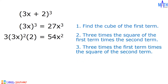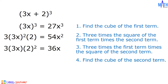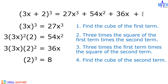Step number 3: 3 times the first term times the square of the second term. We have 3 times 3x times square of 2. Square of 2 equals 4. 9x times 4 equals 36x. Last step: cube the second term. The second term is 2. Cube of 2, or 2 times 2 times 2, equals positive 8. And the cube of 3x plus 2 equals 27x cubed plus 54x squared plus 36x plus 8.